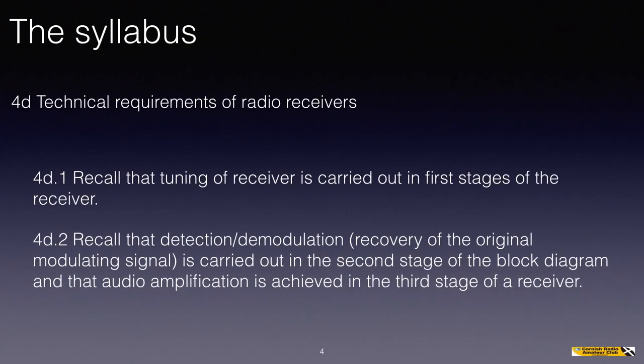The syllabus goes on to address the technical requirements of radio receivers. 4D1 says recall that tuning of a receiver is carried out in the first stages of the receiver. And 4D2 says recall that detection or demodulation — recovery of the original modulating signal — is carried out in the second stage of the block diagram, and that audio amplification is achieved in the third stage of a receiver.